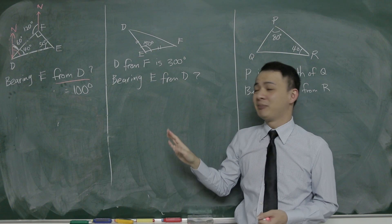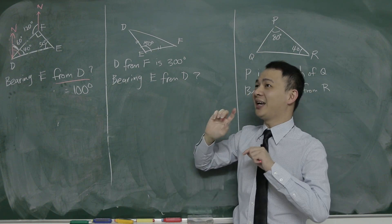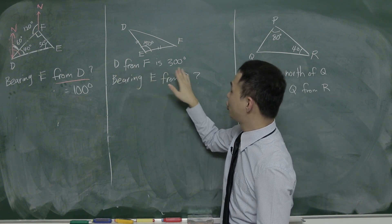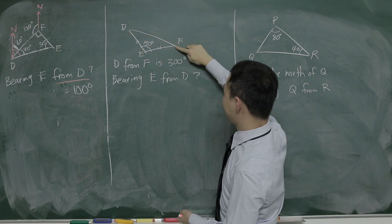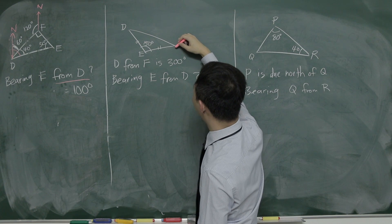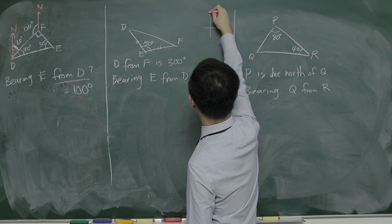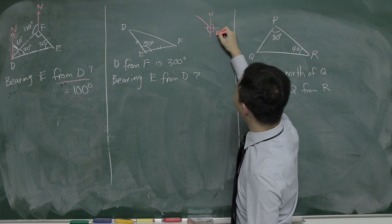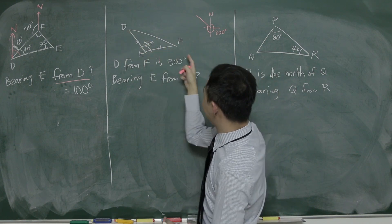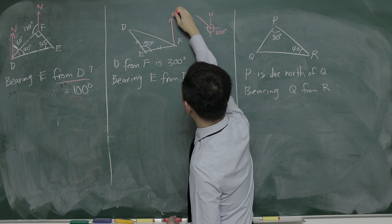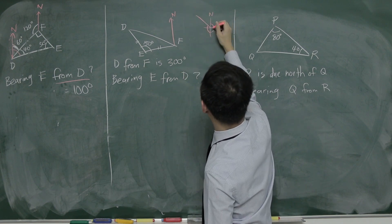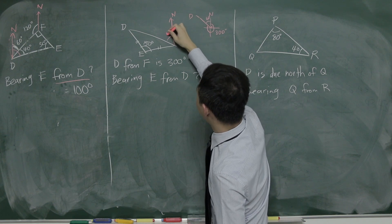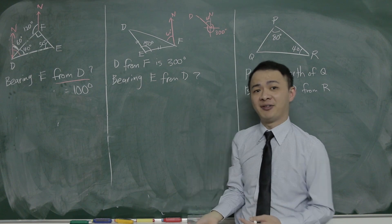The second example is quite hard because the north is not given. You need to visualize the north yourself by reading the bearing given. They tell you the bearing D from F is 300°. So 'D from F' means F is here and I need to imagine how 300° looks. Going 180°, 270°, 300° — it must look something like this. So if this line goes from F to D, then we know the angle here will be 60°. How? Because 360 minus 300 gives 60°.